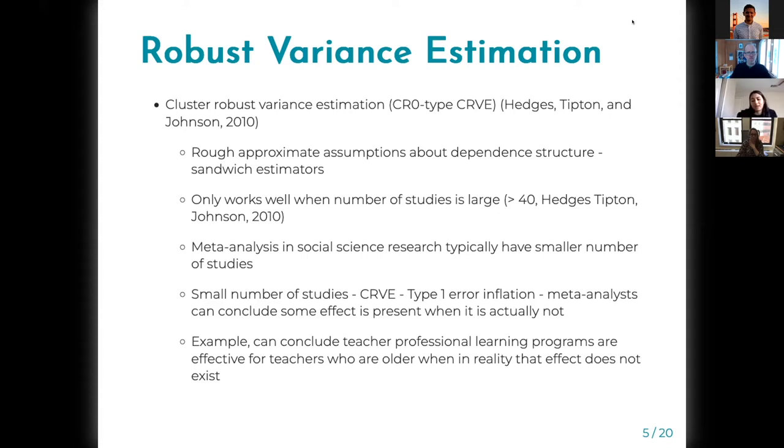For example, in the Garrett, Sitkowicz, Williams paper, you can conclude that the teacher professional learning programs are effective for teachers who are older, when in reality that effect does not exist.